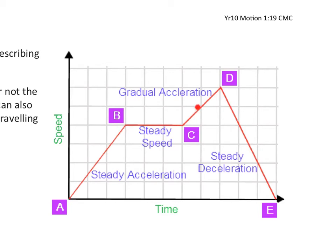This line c to d is a little bit less steep. This one here, a to b, is a steeper line. So that means the acceleration here is not quite as large, not quite as powerful in terms of acceleration.